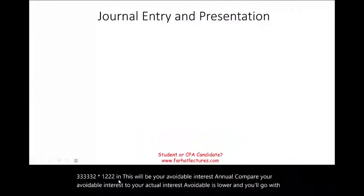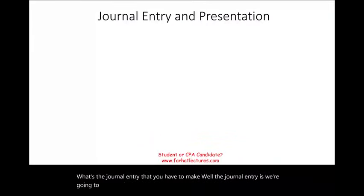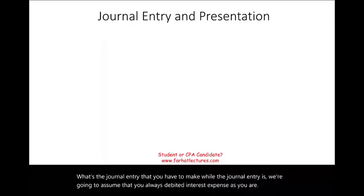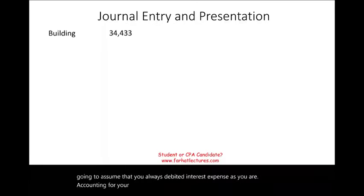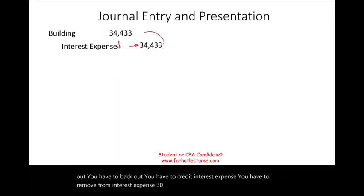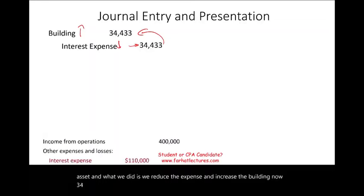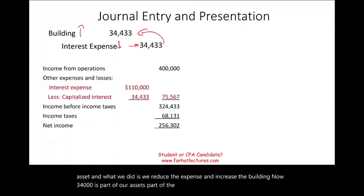What's the journal entry? We assume you always debited interest expense as you accounted for your interest. Now you have to back it out: credit interest expense for $34,443 and debit the Building account — increasing the asset. This reduces the expense and increases the building. Now $34,443 is part of the asset — part of the building.